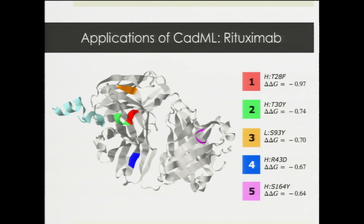Let's look at applications of CatML to designing antibody therapies. In gray, you can see an antibody called rituximab, which targets certain lymphomas and leukemias that suffer from too many B cells — the B cells rapidly proliferate and form cancers which spread throughout the body. Rituximab binds to the B cell, triggering its destruction and stopping the spread of cancer. I scanned the entire surface of rituximab, exhaustively searching all possible mutations, and identified five mutations in particular that my method predicted would significantly improve how well rituximab binds to the B cell and hopefully eliminate the cancer more effectively.